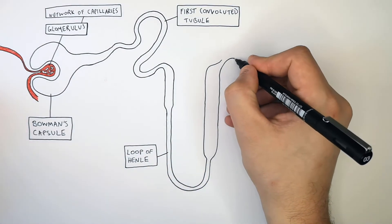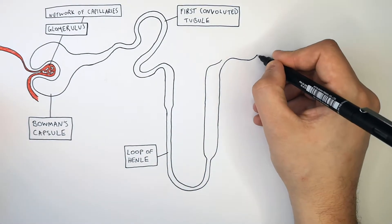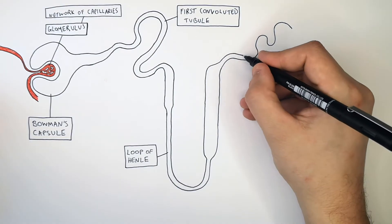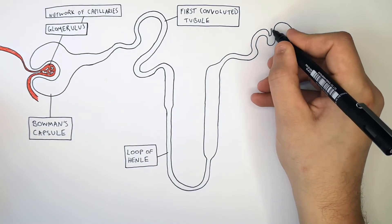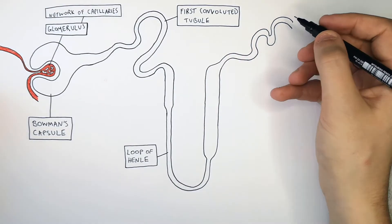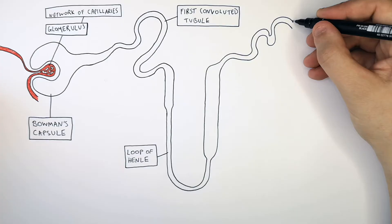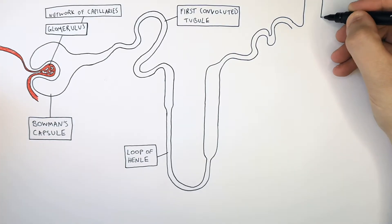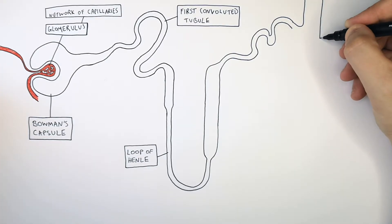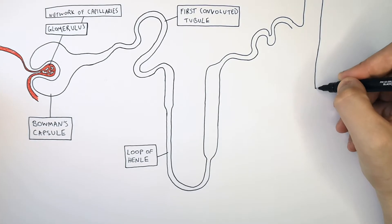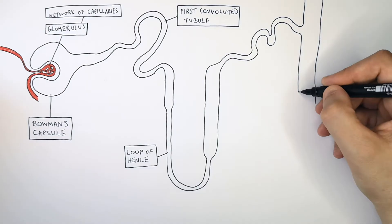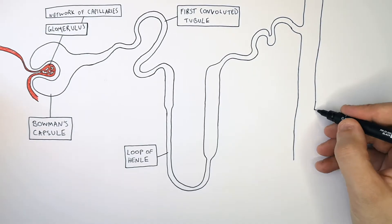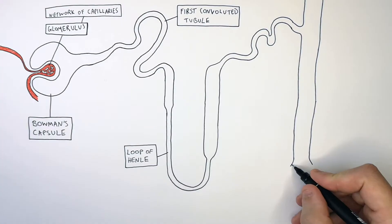This part of the nephron is the second convoluted tubule. You do not need to know the function of the second convoluted tubule. The second convoluted tubule connects the loop of Henle to the collecting duct, which is inside the kidney.